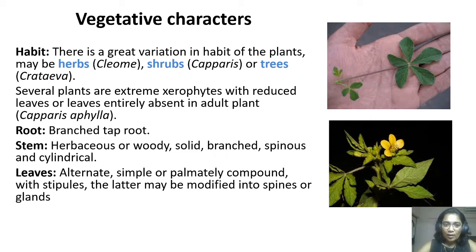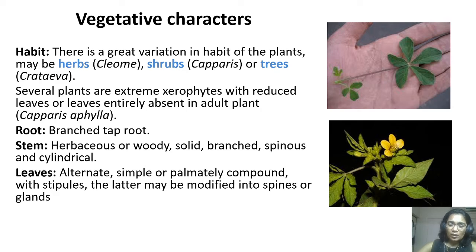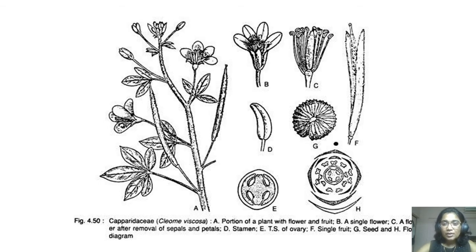It's a dicot angiosperm, so a taproot system is there. Herbaceous or woody stem is there — solid, branched, spinous, and cylindrical stem. Leaves are alternate, simple or palmately compound with stipules. There is also a gland present in these plants. This is the general morphological example of Cleome viscosa, and you can see the stalk on the ovary, which is the gynophore.